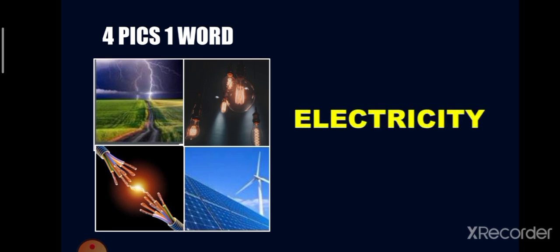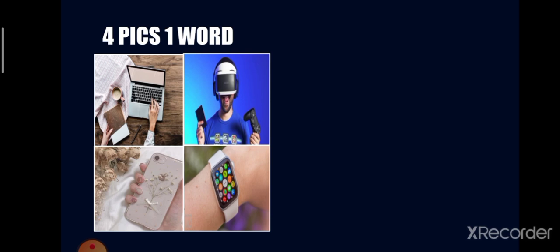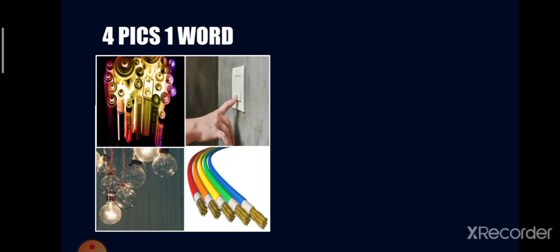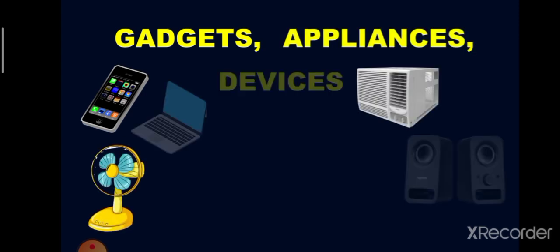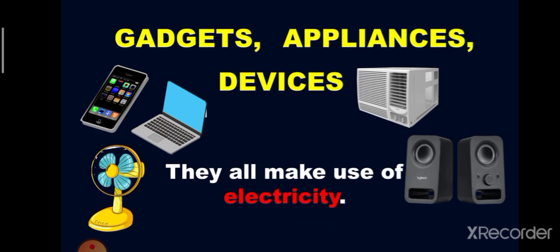Now let's play Four Pics One Word. I'm going to show four pictures and from that, identify what is being referred to. The first set of pictures tells about electricity. Next one, it is all about gadgets. Next, we have battery, switch, light bulb, and electrical wire. That set of pictures tells about electric circuit. Gadgets, appliances, and devices all make use of electricity.